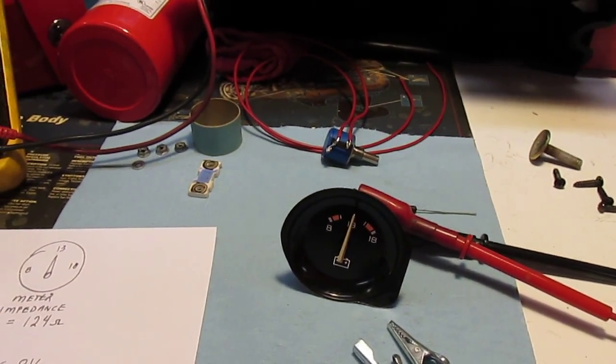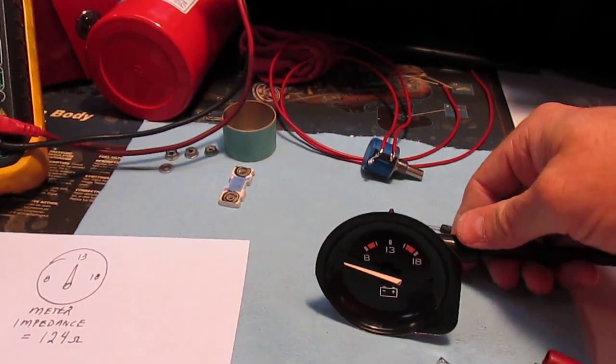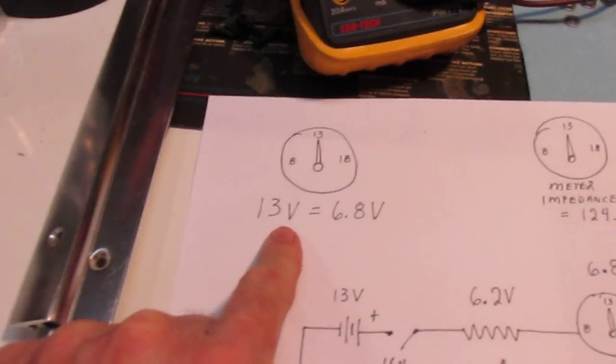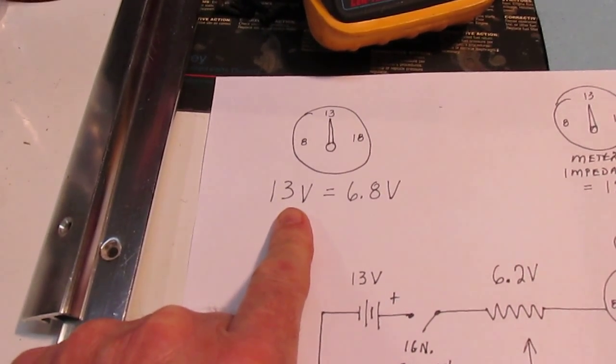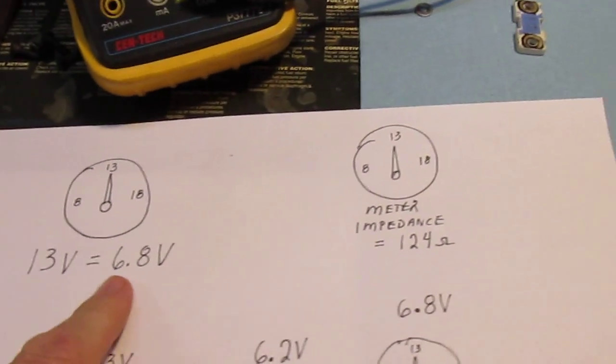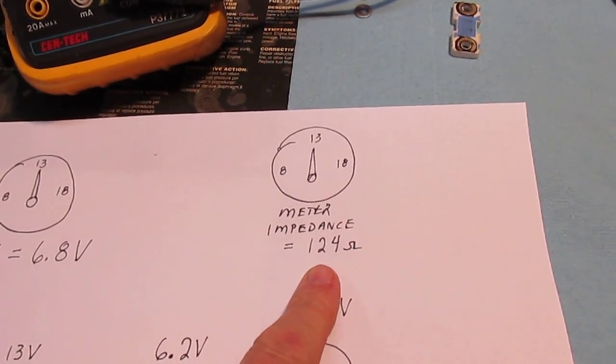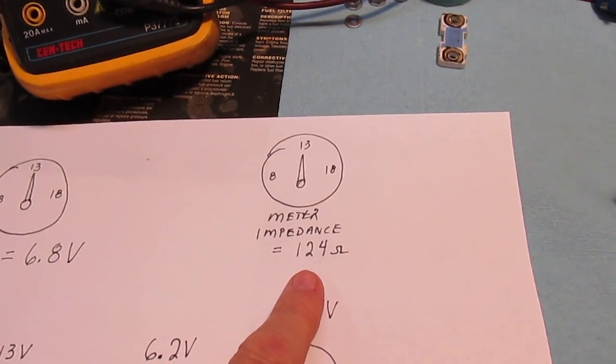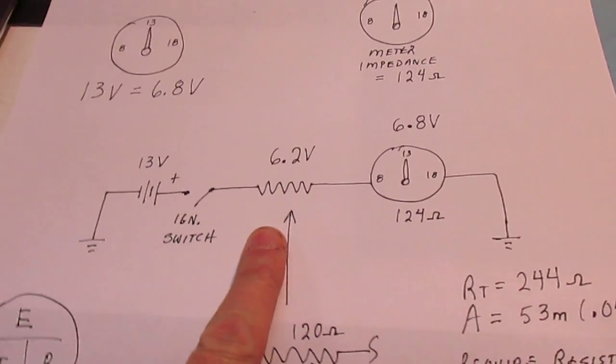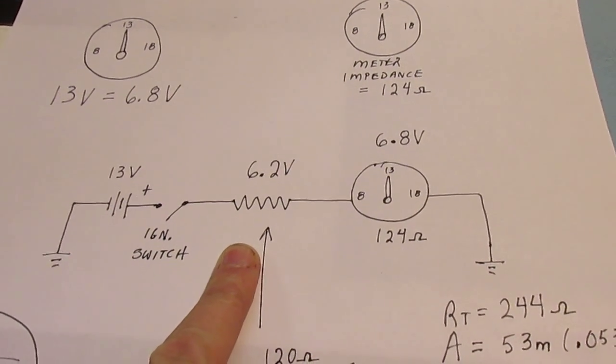But that was just to determine how much voltage was required across the meter to read 13. So once I did that, now we're going to go over here to the actual drawing again. Here's what I did so far. We just demonstrated that for the voltmeter to read 13 volts, it required 6.8 volt drop across it. And then at the same time, I also measured the meter impedance, the voltmeter impedance, and it came up to 124 ohms. So now I realize that if 13 volts is going to be applied to this thing in the car, the resistor that's going to be in series with it is going to have to be approximately the same value because I'm going to have to drop about the same amount of voltage on the resistor and the meter.